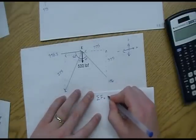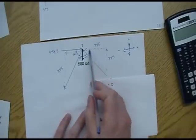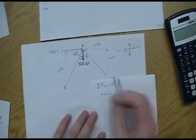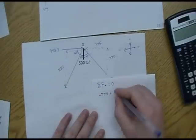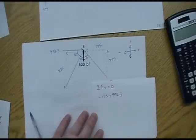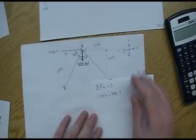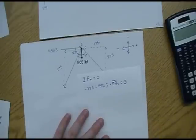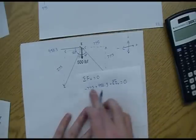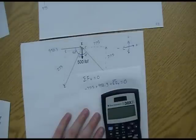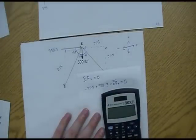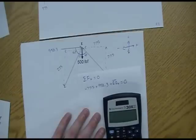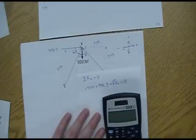The sum of all the forces in the X direction equals zero. Well, what are all my forces in the X direction? We have this one here, 775, it's a negative, negative 775, plus a positive 958.3. What's the only force left? It's this one right here, this EB in the X direction. All three of those added together have to equal zero. So let's just simplify this guy right here. So negative 775 plus 958.3 equals, I have 183.7.